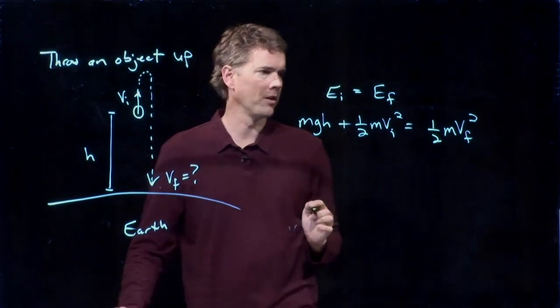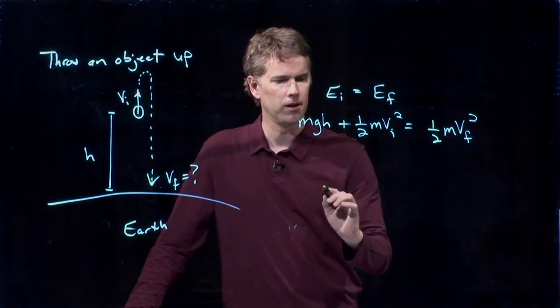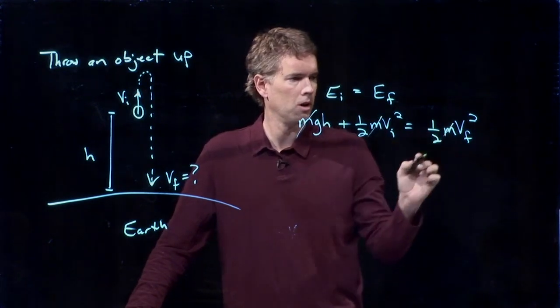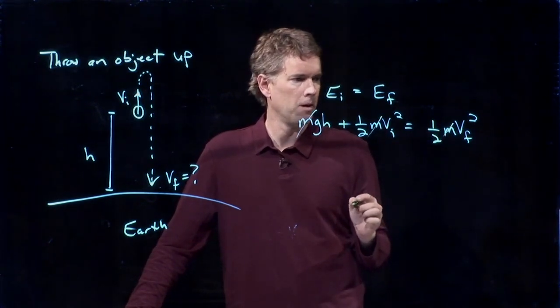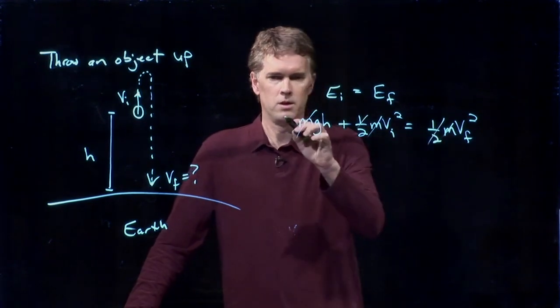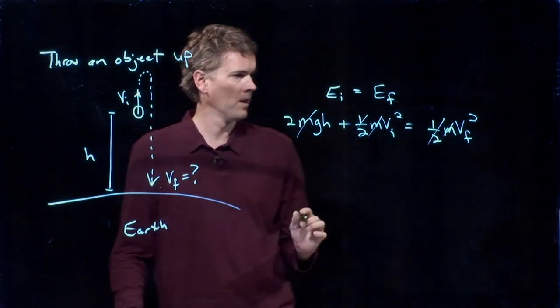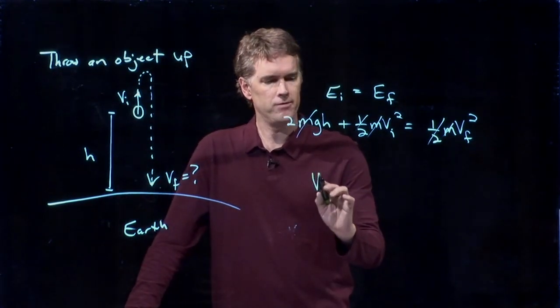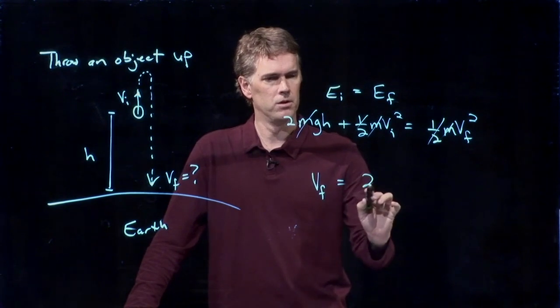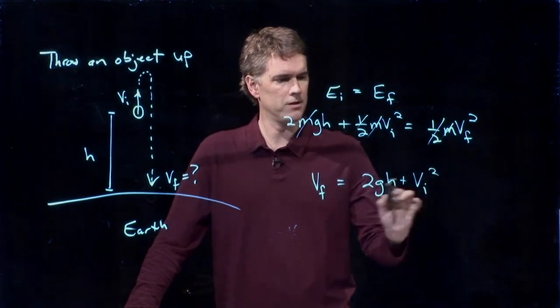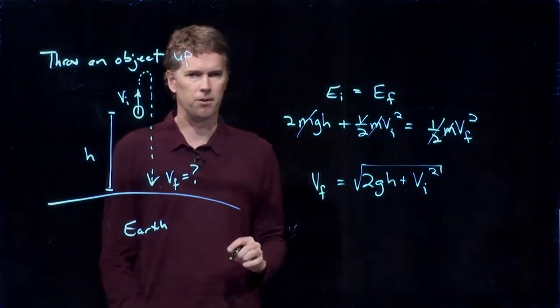And now we can solve this thing for Vf. How do we do it? Well, we can cross out the m's on both sides. If I multiply everything by two, then the one halves go away and I put a two out in front of that thing. And so we get Vf is equal to 2gh plus Vi squared. And I'm going to take the square root of that whole thing.